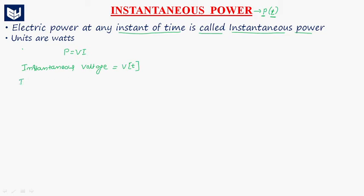Similarly, instantaneous current — that is current at any instant of time — is I of T.